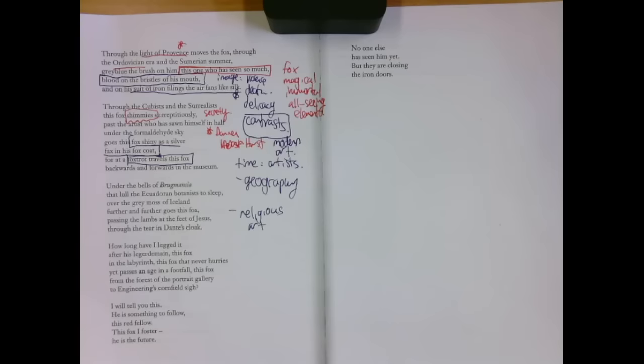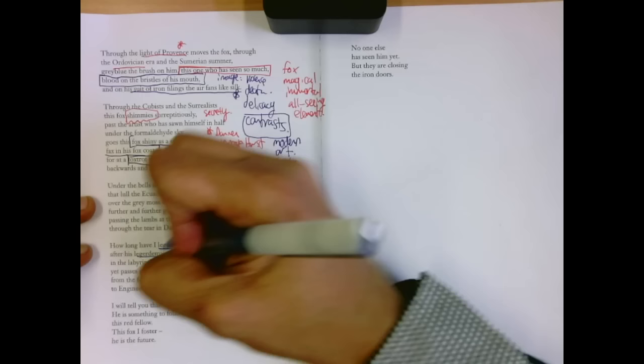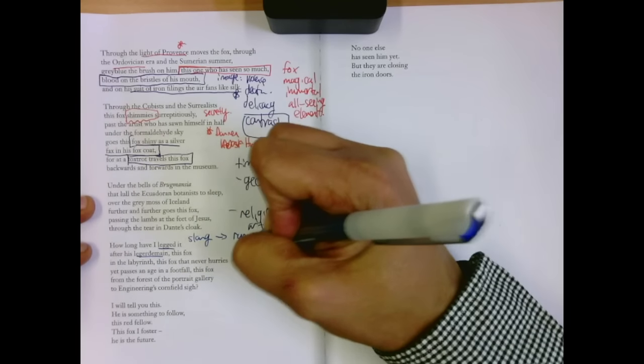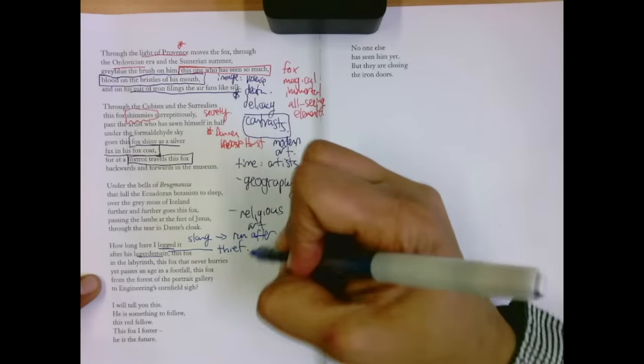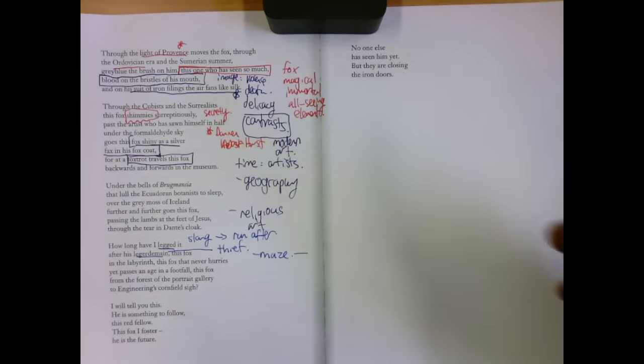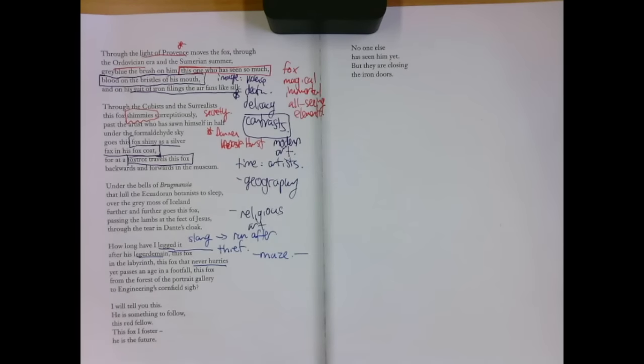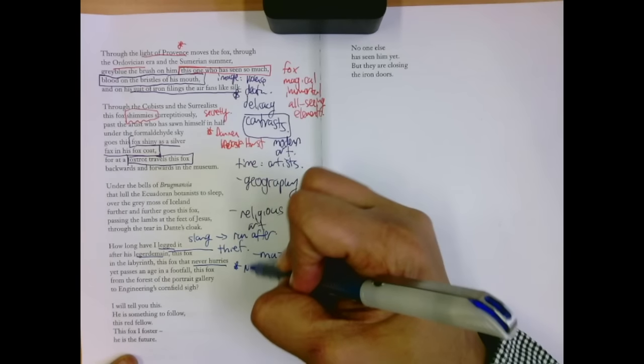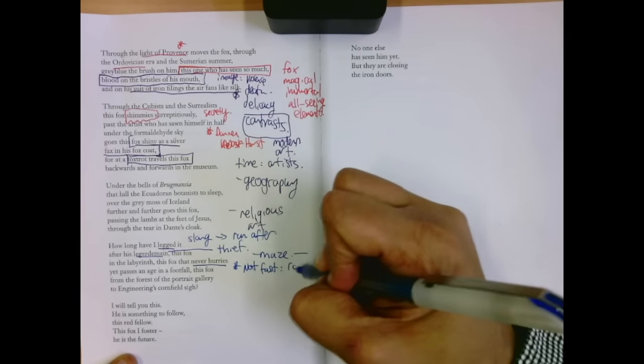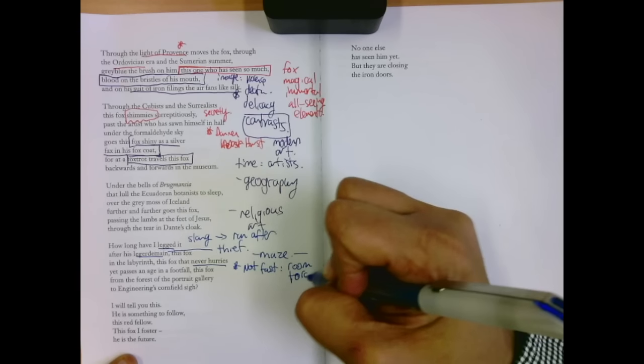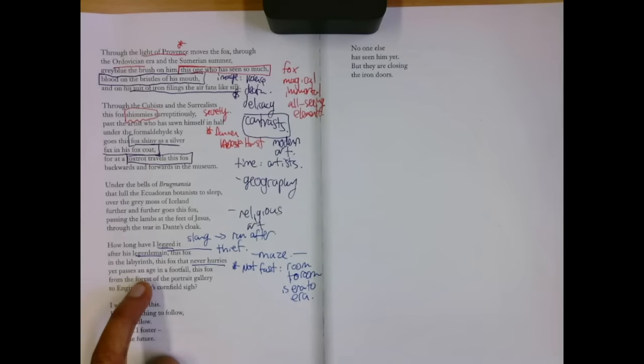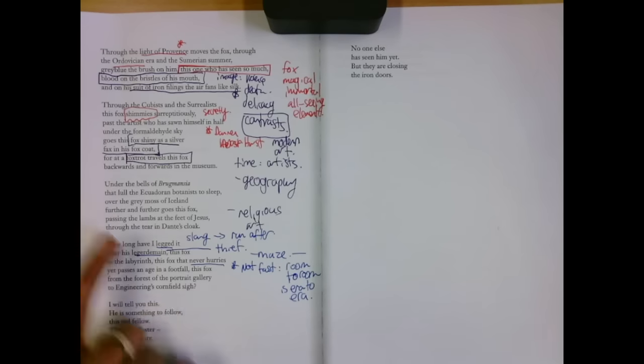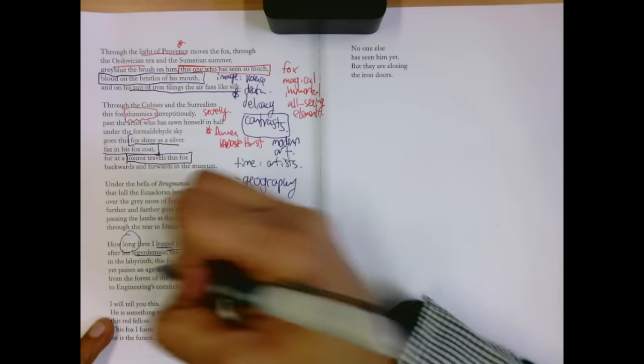How long have I legged it after this leisure domain? How long have I followed, legged it against slang to run after? How long have I run after this thief with light hands? This fox in the labyrinth, he's in a maze. The museum's a maze. This fox that never hurries, he takes his time, yet passes an age in a footfall. So even though not fast, room to room is era to era. He goes fast. He's not moving fast, but he goes. In a few steps, he passes a whole age. This fox from the forest of the portrait gallery to engineering's cornfield sigh.